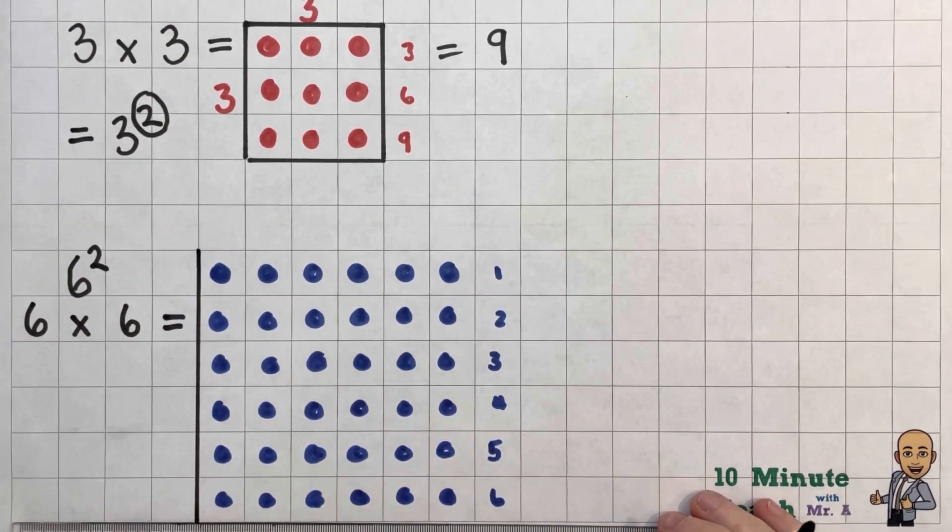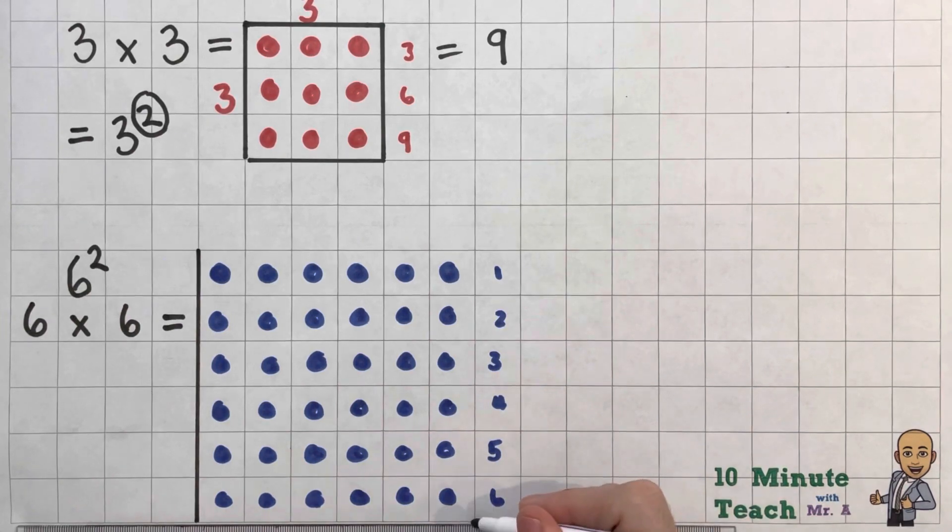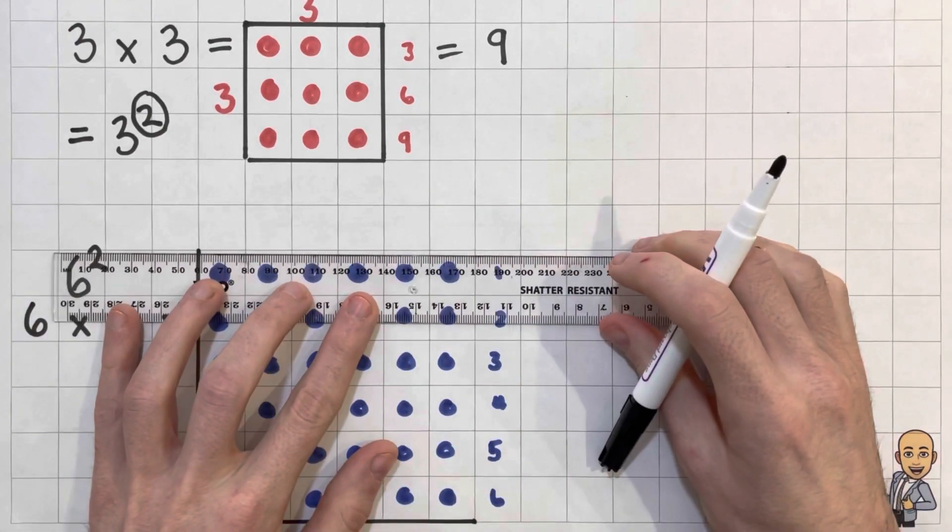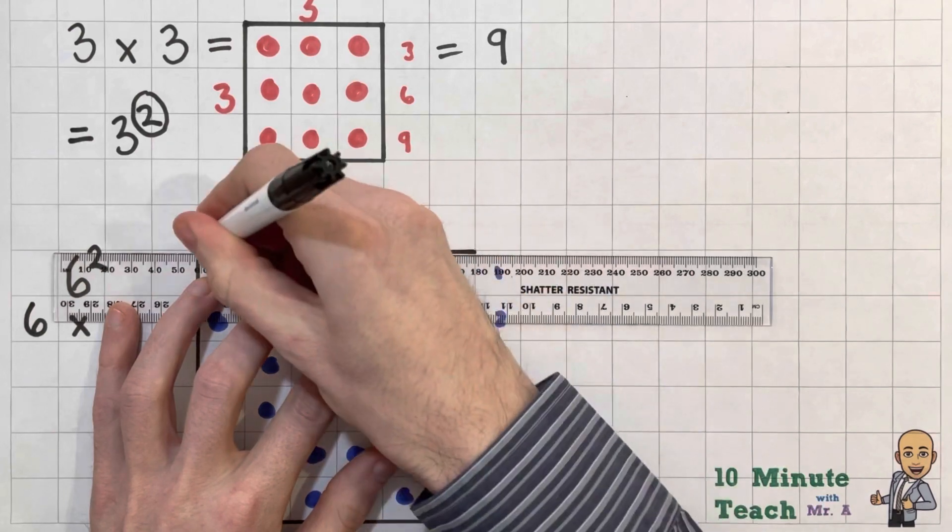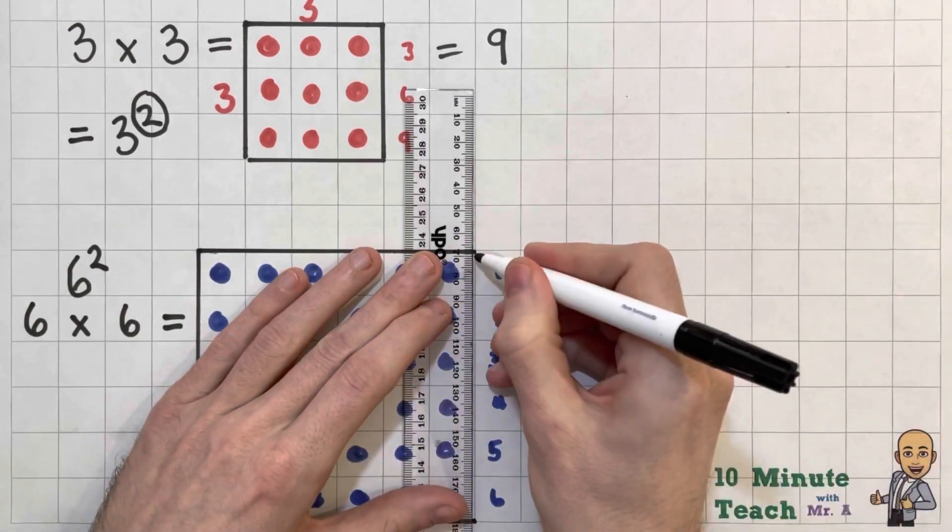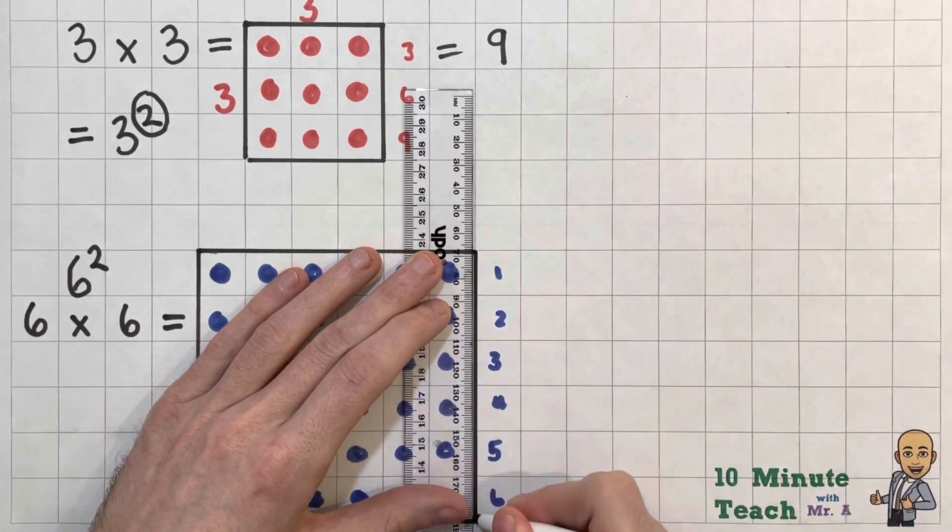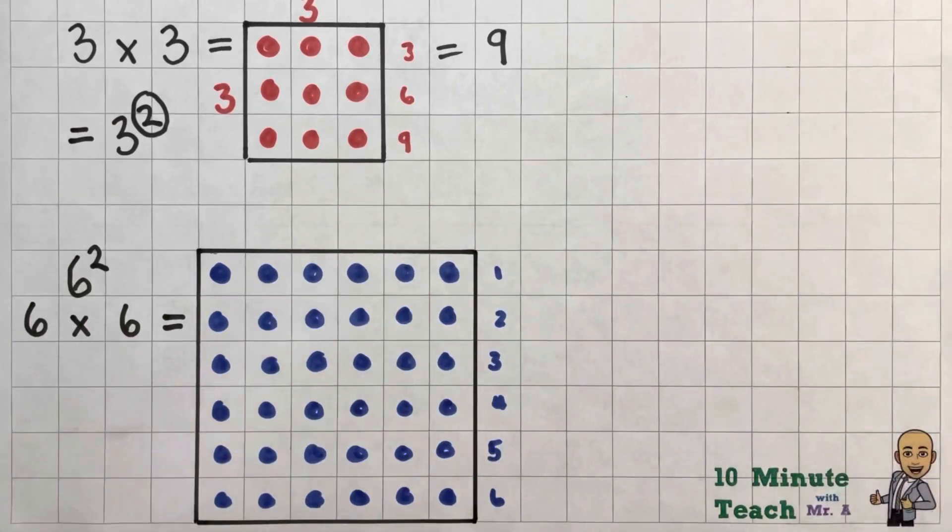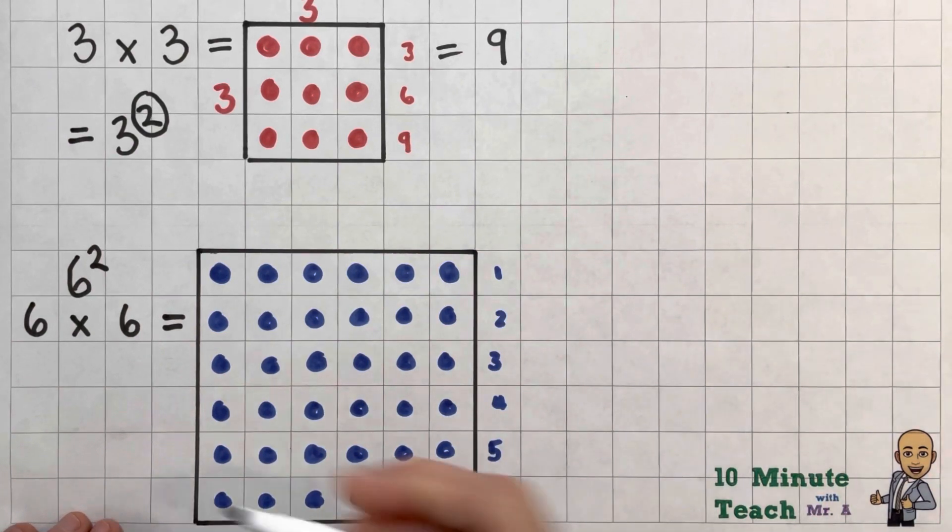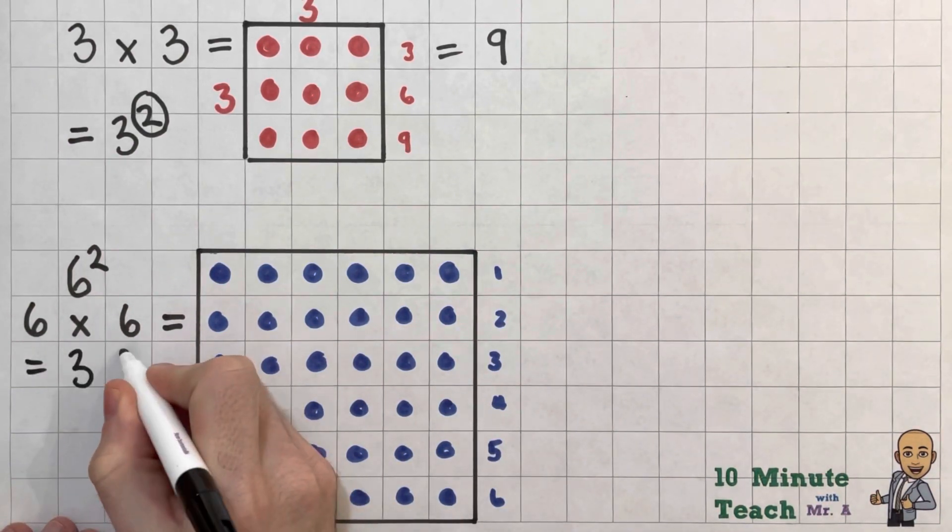And you can draw out all your square numbers. And as you can imagine, as you get to 12 times 12 or 12 squared, it starts to become rather large when you draw it out as a diagram. So let's have a look. There you are. So there is our 6 squared. And 6 sixes are 36. So let's draw in our answer there.